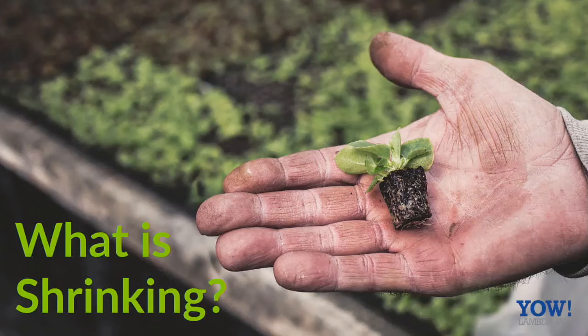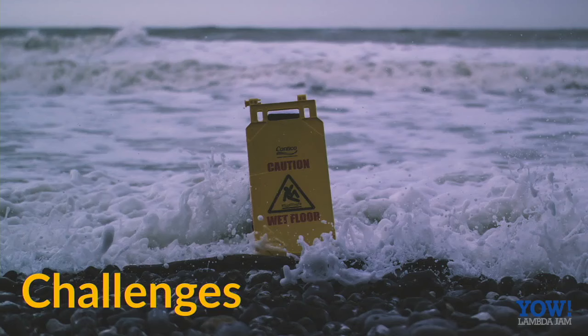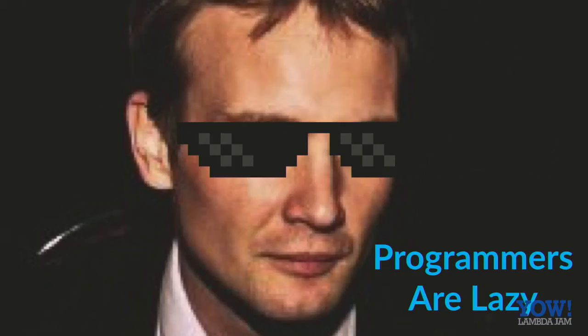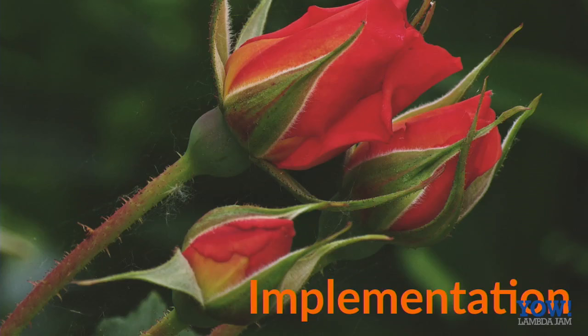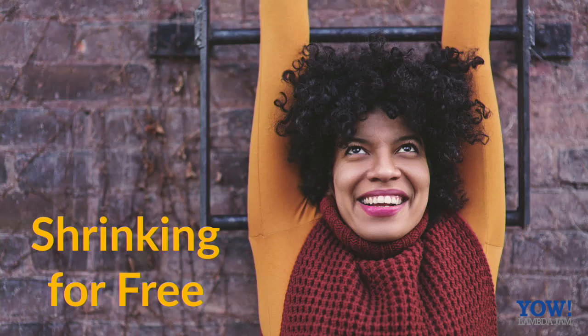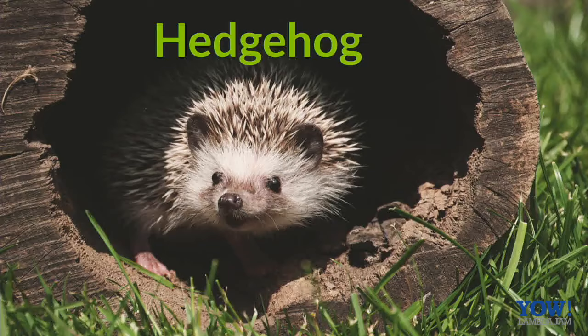So just wrapping up, we have seen what shrinking is. We have learned about the difference between type directed shrinking and the challenges that we faced in trying to use it. We've seen that programmers are lazy and they don't write shrink functions. So we have looked at another approach, integrated shrinking. We've seen how to implement that and how that gives you shrinking for free. And finally, we've seen some of the things that Hedgehog can do on top of that idea.